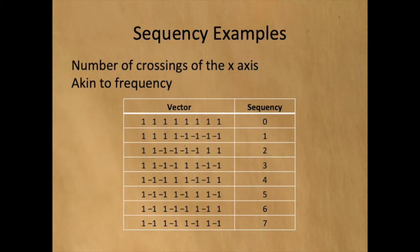The third vector has two 1s, followed by four minus 1s, followed by two 1s, so there are two transitions, and it has a sequency of 2. And so on.